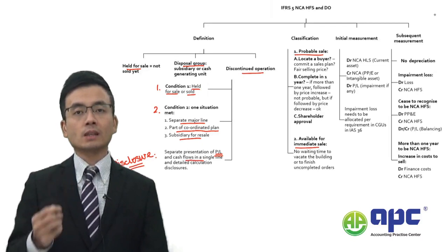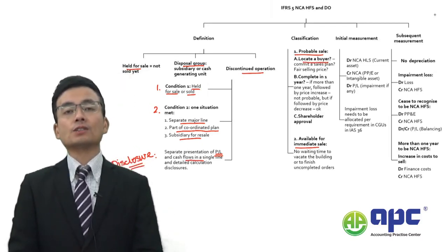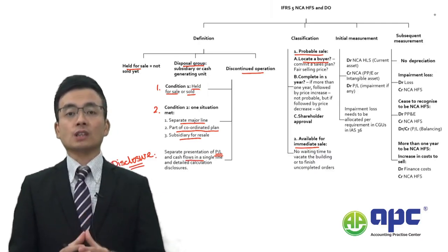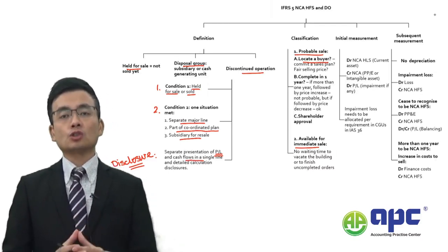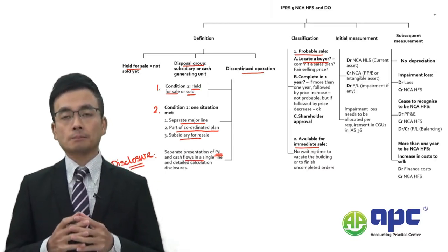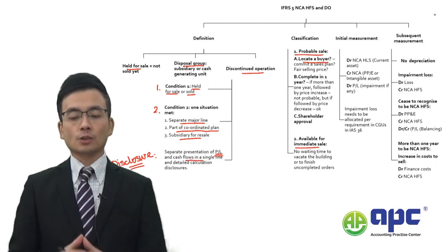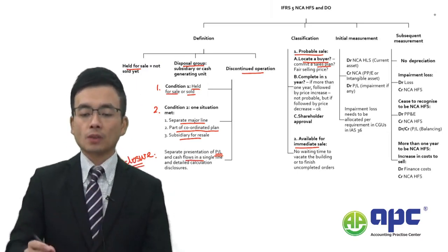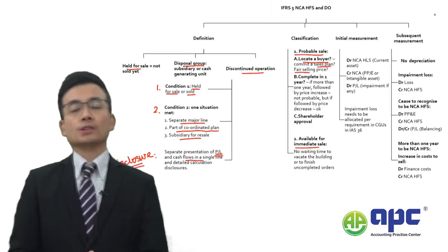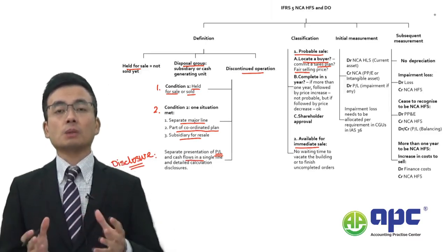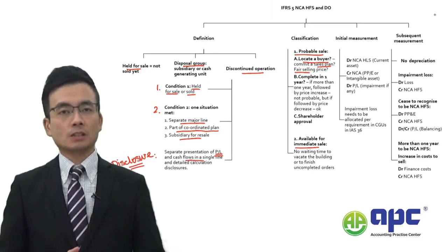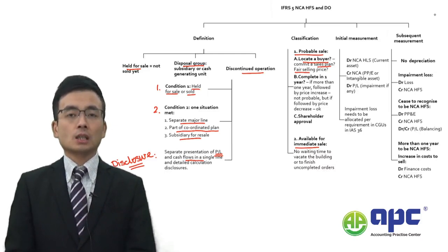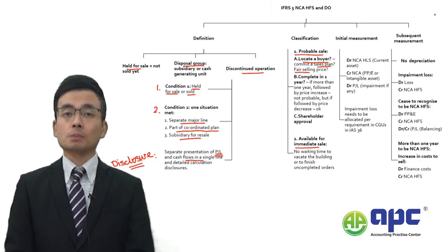From the auditor's point of view, we need to watch out for: first, is there evidence that the business is actively locating a buyer? We can check advertisements placed by agencies. If you were to sell a piece of building, you usually engage a third-party agency — so check the sale plan and advertisement. You also need to determine whether the asking price is fair. For example, if similar competitors are selling at $1 million but you are selling at $1 billion, it may be very difficult to complete the sale because the price is too high.